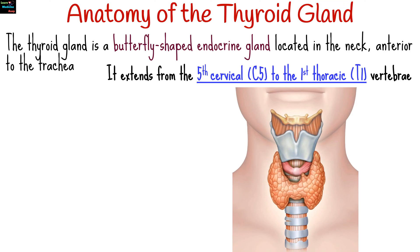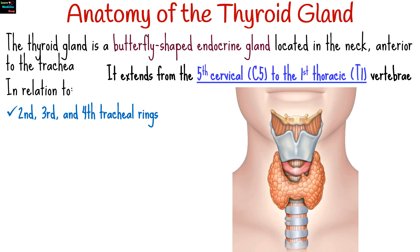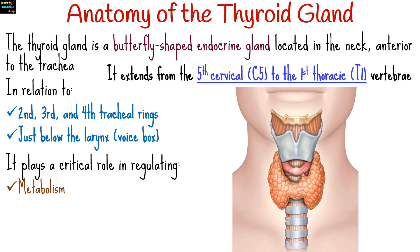The thyroid gland is a butterfly-shaped endocrine gland located in the neck, anterior to the trachea in relation to the second, third, and fourth tracheal rings, just below the larynx or voice box. It plays a critical role in regulating metabolism, growth, and development through the secretion of thyroid hormones.